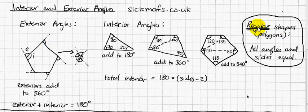Now, if you have a regular shape, or what they normally say is a regular polygon, a polygon is just a many-sided shape. So a regular shape is one where all the angles and the sides are equal.